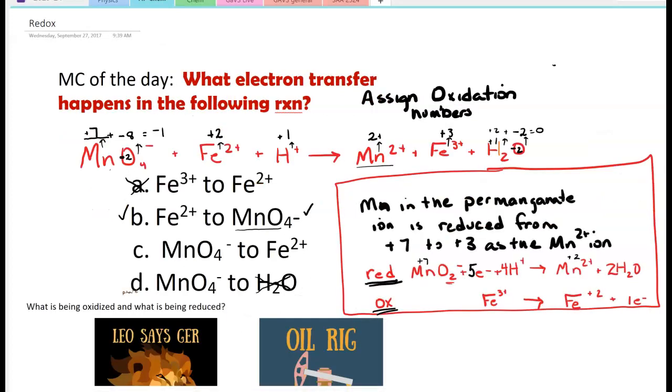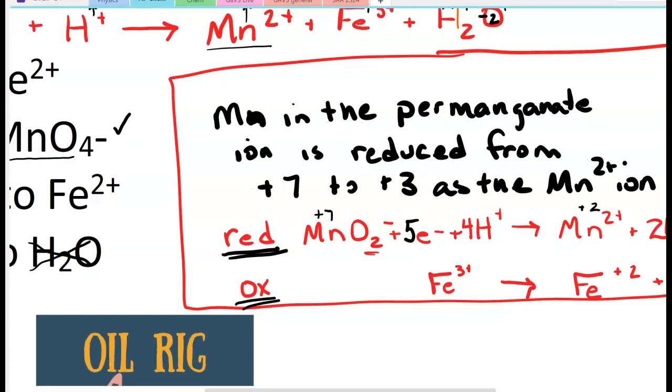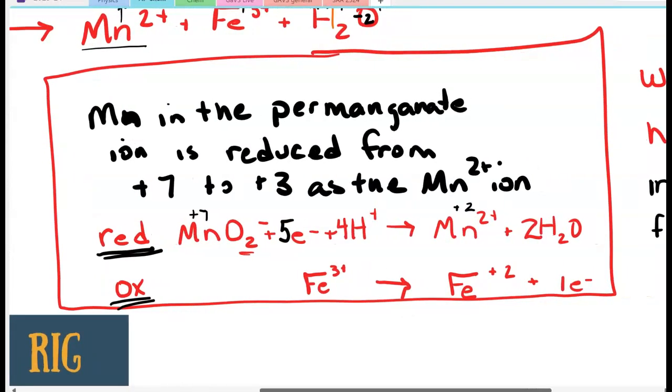So the manganese in the permanganate ion is reduced from plus 7 to plus 2 and becomes the manganese 2 ion. We can write that as a half reaction, focusing on that reduction. This says that the permanganate ion gains 5 electrons to become manganese 2. What about this hydrogen I've stuck in there? What about the hydrogen that was stuck in there? There were 3 reactants in my net ionic equation.